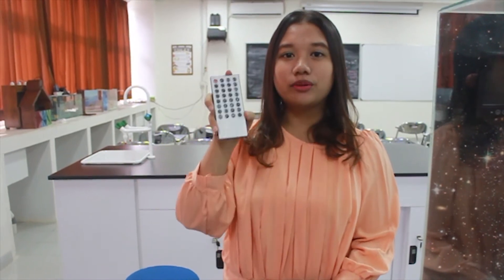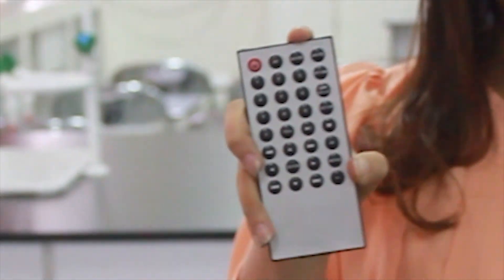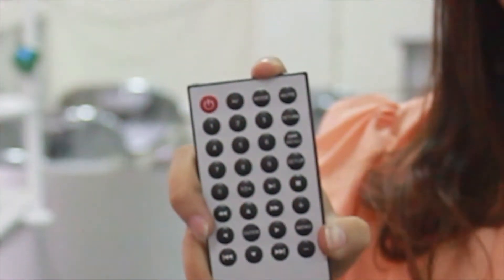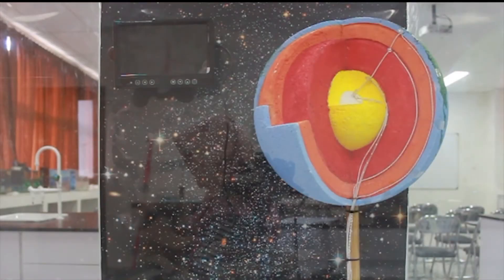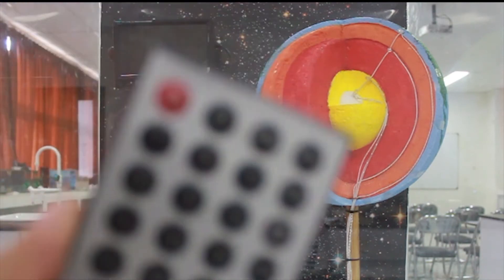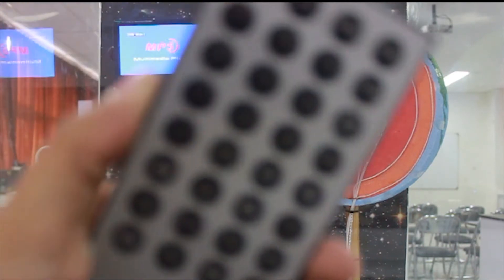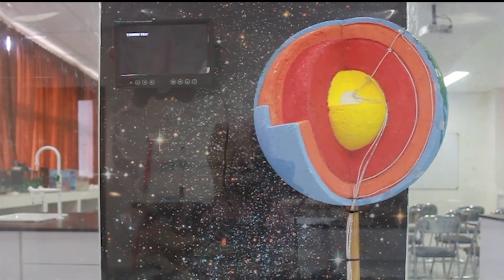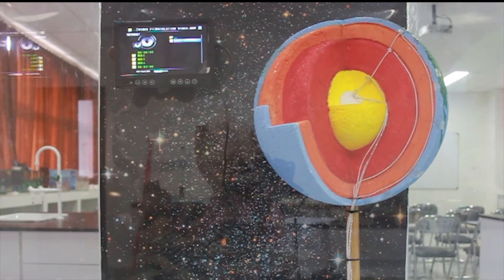Here's the remote. The remote can turn on the monitor. You can select the video that will show the explanation about the Earth crust in the monitor. Now we turn on the monitor by the remote control, and then choose the file that we want to play.